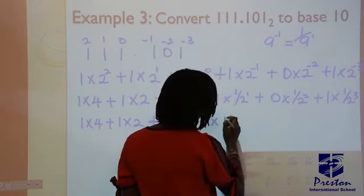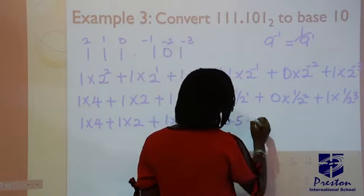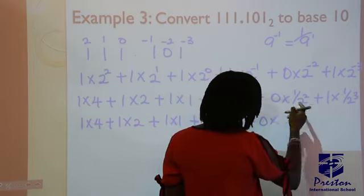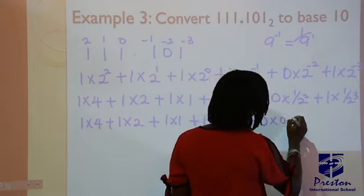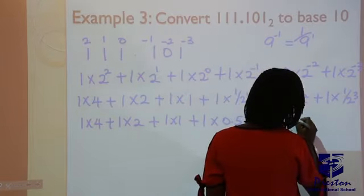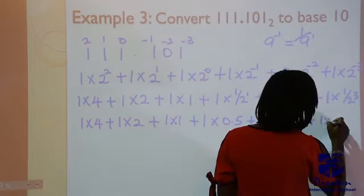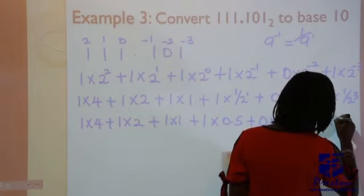So 2 raised to power 2 is 4, 2 raised to power 1 is 2, 2 raised to power 0 is 1. 1 over 2 gives 0.5, plus 0 times... 1 over 4 will give you 0.25, plus 1 times 1 over 8 will give you 0.125.